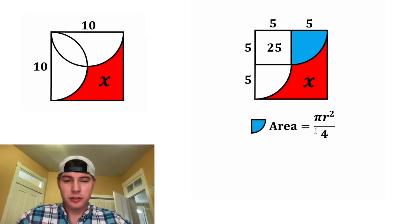The area of the quarter circle is πr² divided by 4. The radius of this quarter circle is equal to 5, so we can plug in 5 for r. 5 squared is equal to 25, so the area of this blue region is 25π over 4.